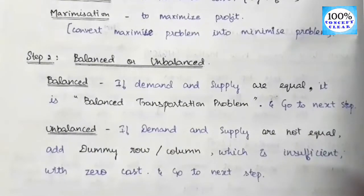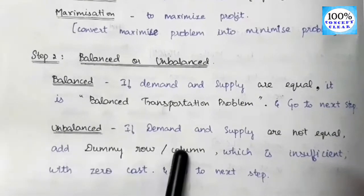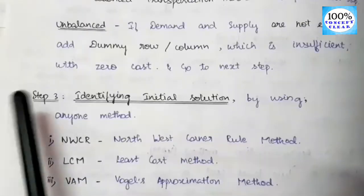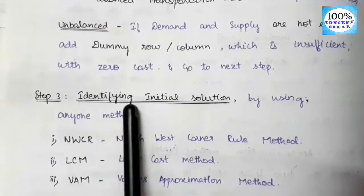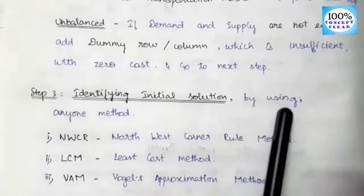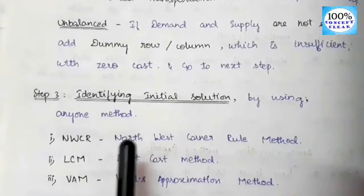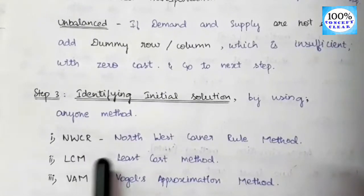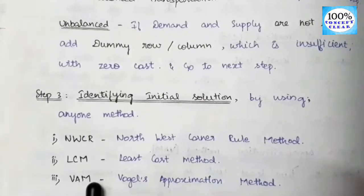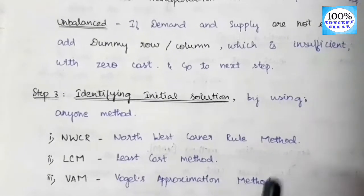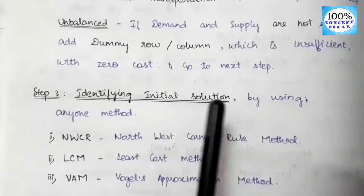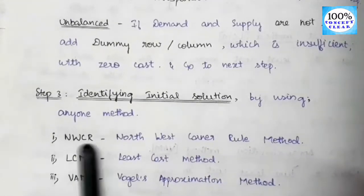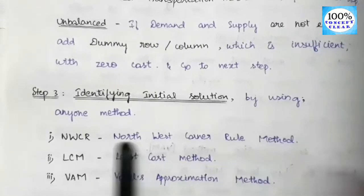The unbalanced type will be discussed in an upcoming video. Step 3: identify the initial solution using any one method — the North West Corner Rule method, the Least Cost Method (LCM), or Vogel's Approximation Method (VAM). In this video, we are going to use the North West Corner Rule method.